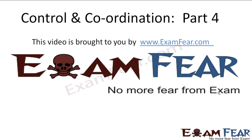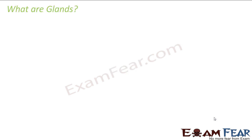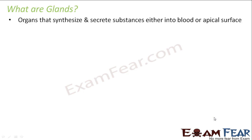Hello friends, this video on control and coordination part 4 is brought to you by examfear.com. Now let us try to understand first: what are glands? Glands are organs that synthesize and secrete substances either into the blood or the apical surface.